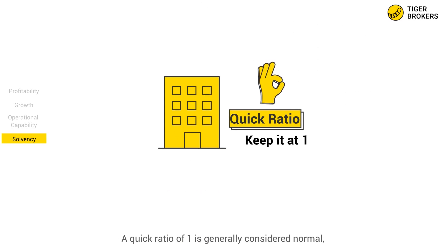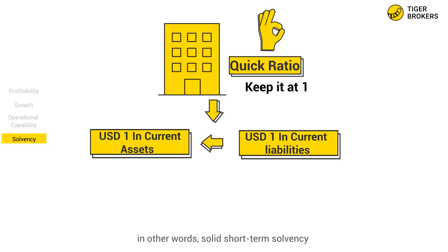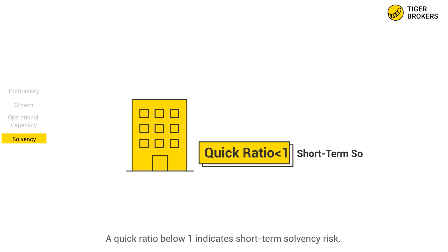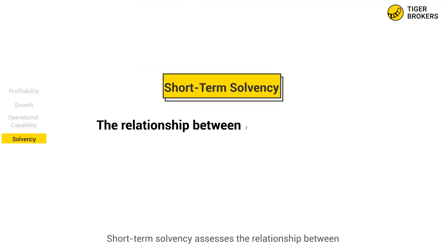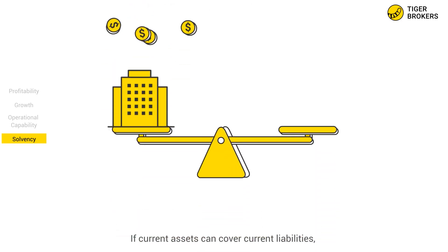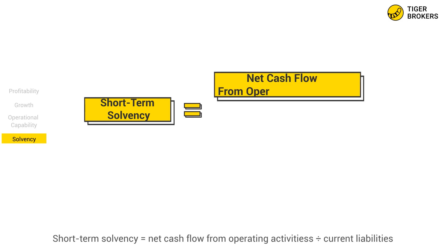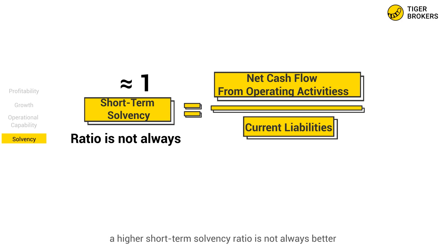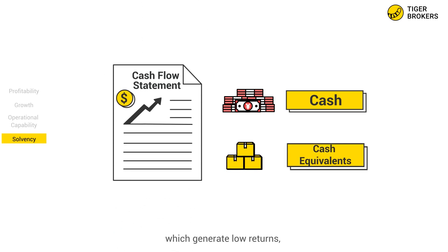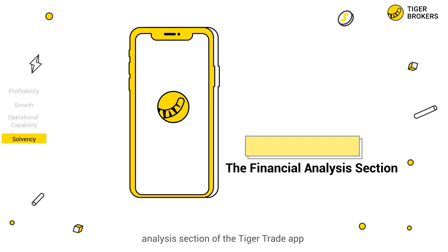A quick ratio of one is generally considered normal, indicating there is one US dollar in current assets available to repay every one US dollar in current liabilities — in other words, solid short-term solvency. A quick ratio below one indicates short-term solvency risk, while a quick ratio far above one indicates weak cash management. Short-term solvency assesses the relationship between current assets and current liabilities. Short-term solvency equals net cash flow from operating activities divided by current liabilities, and should generally be maintained at one. A huge amount of cash and cash equivalents on the books, which generate low returns, indicates poor cash management and weak profitability. You can find these ratios in the financial analysis section of the TigerTrade app.